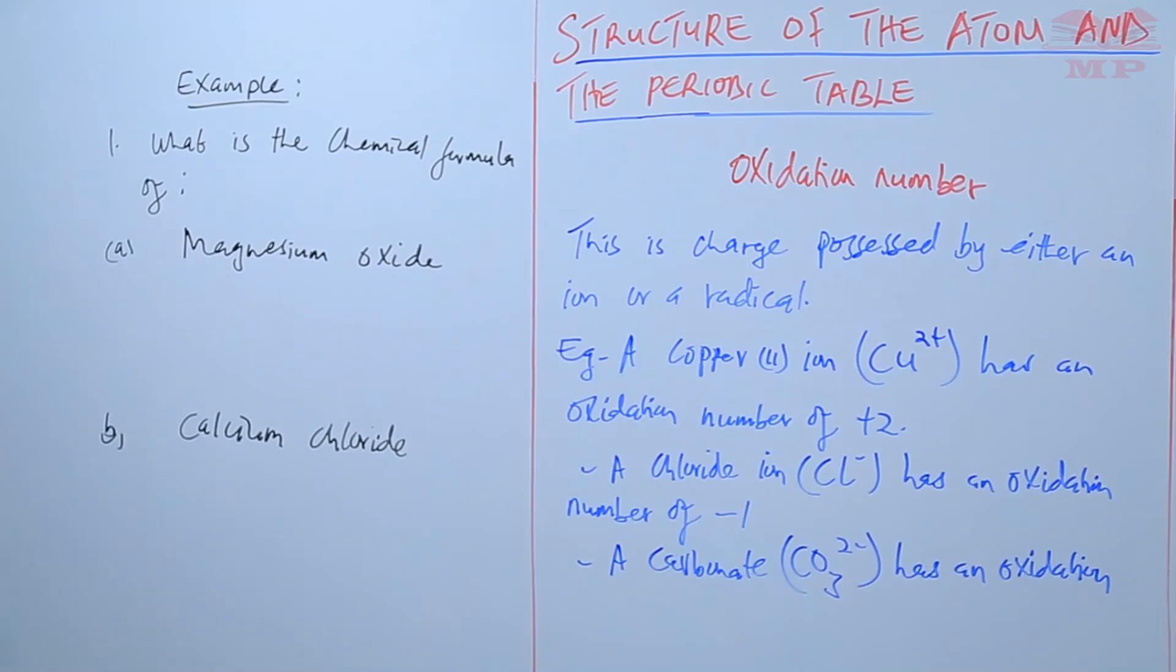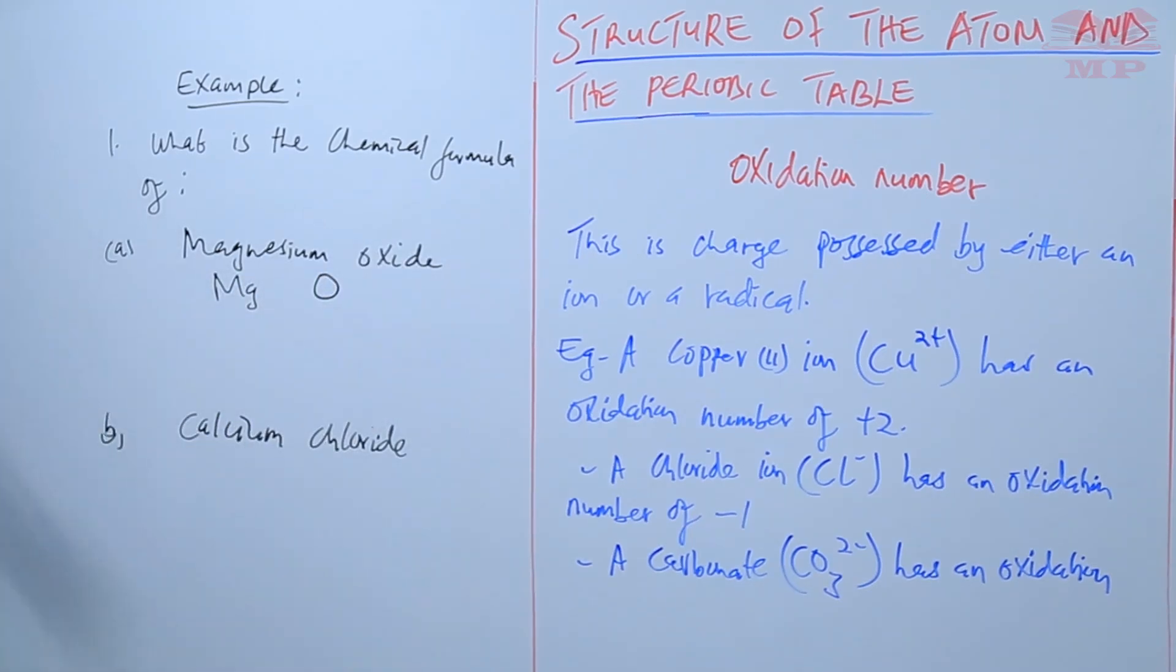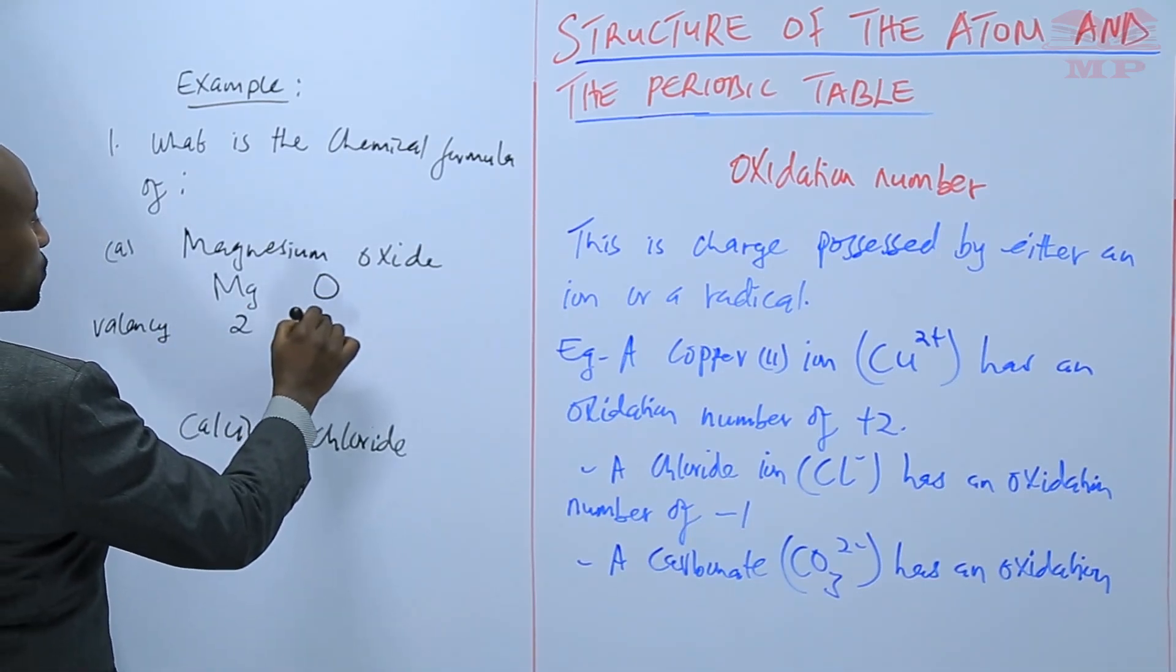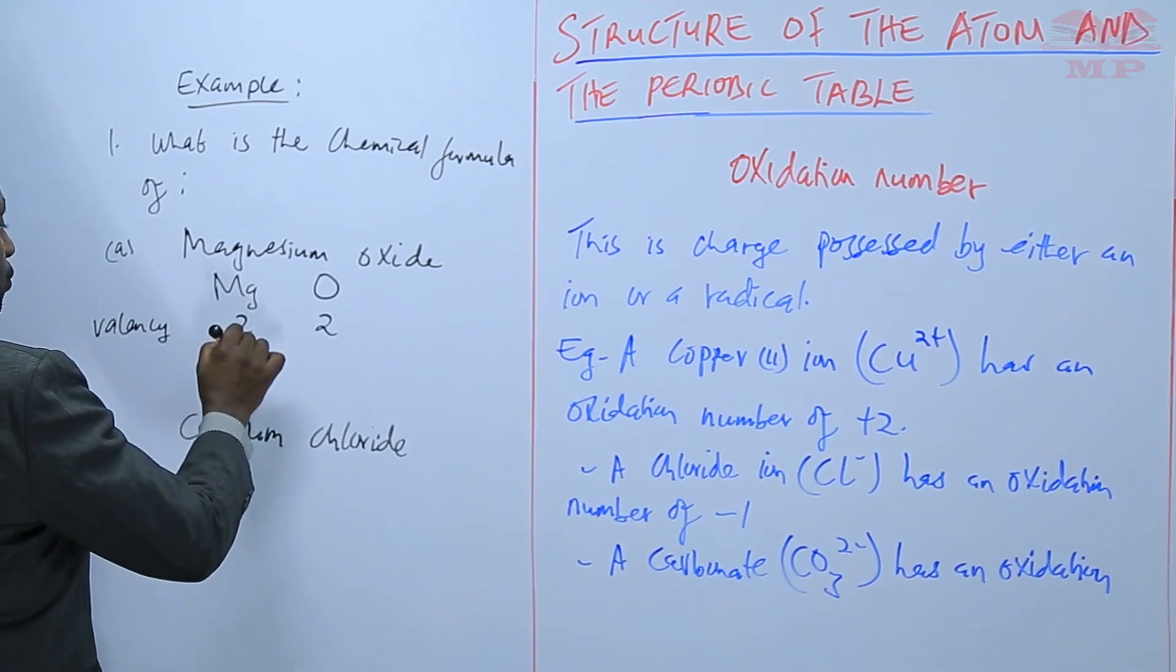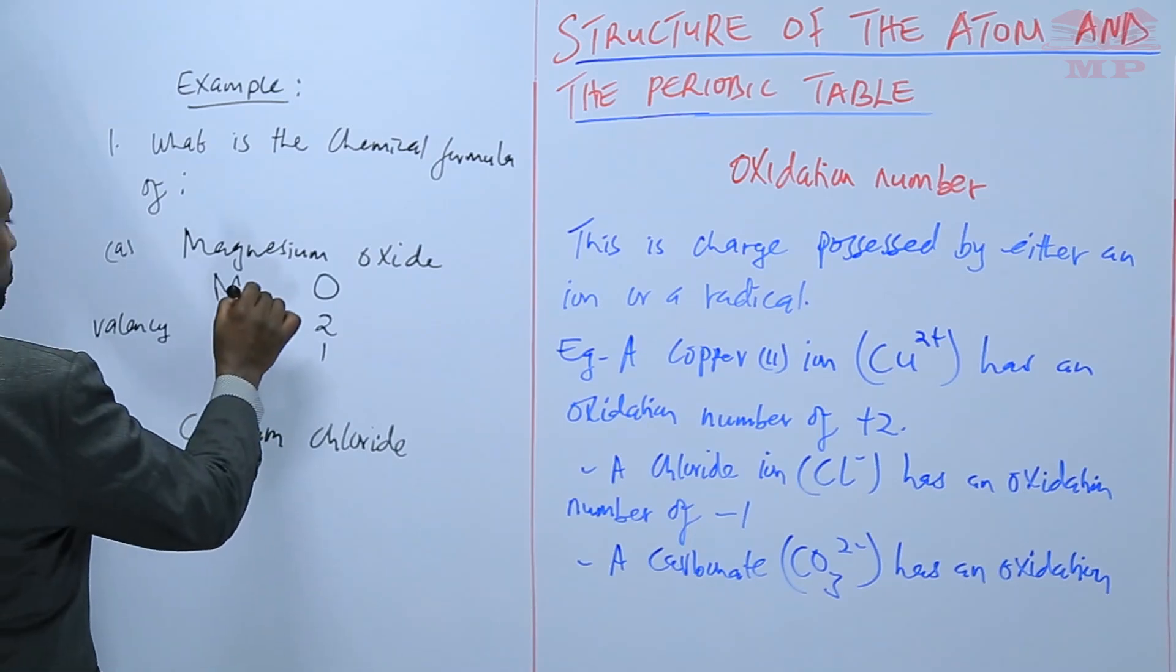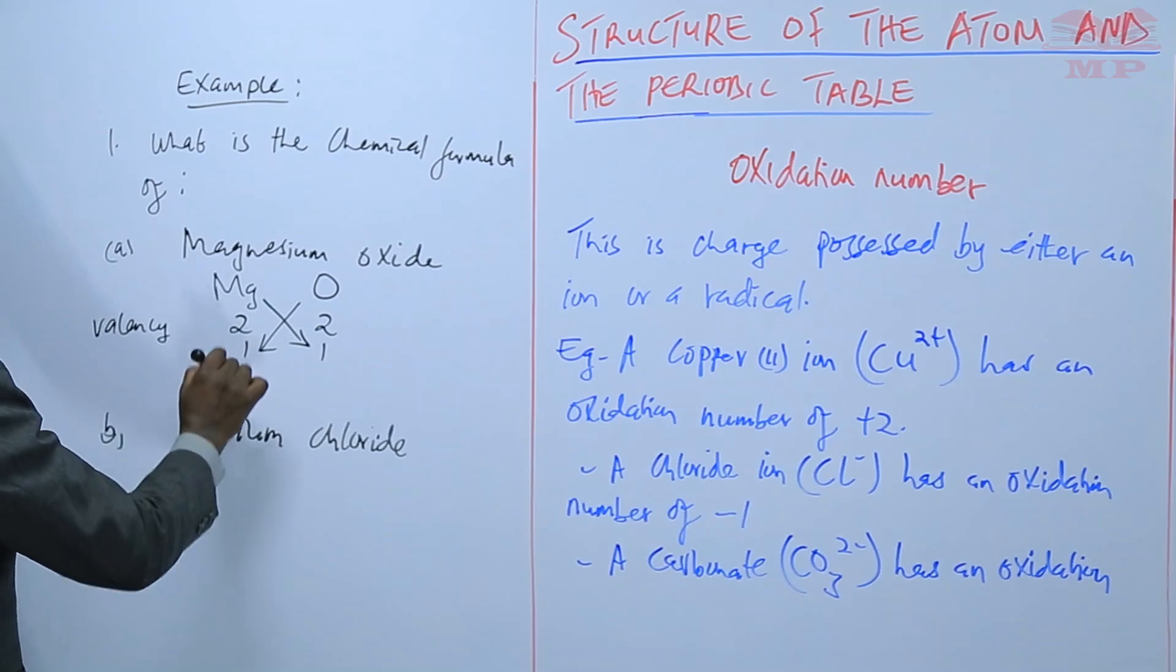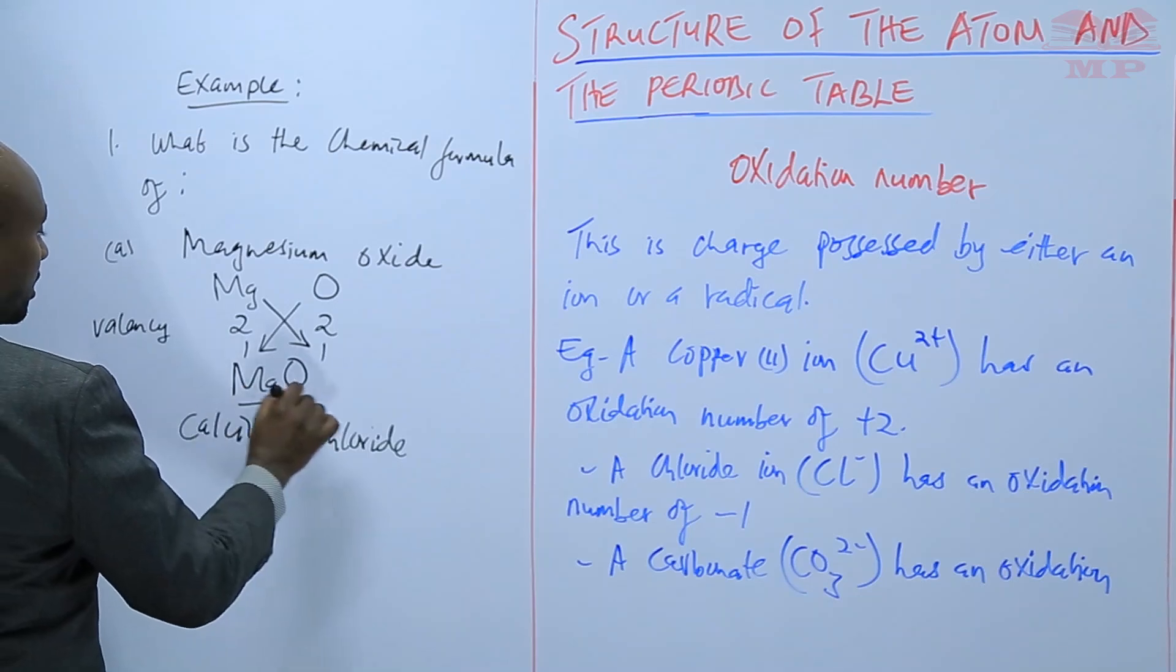So the first thing when you're writing the chemical formula we write the symbol for magnesium is Mg, oxide is O, then we come here and indicate the valency. The valency for magnesium is 2, the valency for oxygen is 2, so where they have the same valency you simplify it into 1 is to 1 and then you cross multiply. So the formula will be Mg multiplied by 1, O multiplied by 1, so that will be the chemical formula for magnesium oxide.